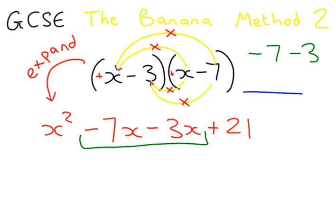So think of your number line. You start off on minus 7. You go back 3. This takes you to minus 10. So minus 7x take away 3x is minus 10x. So our final answer is x squared minus 10x plus 21.